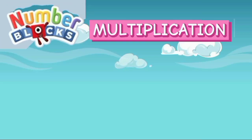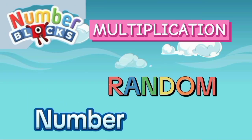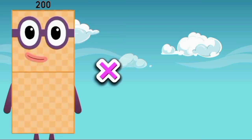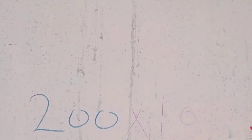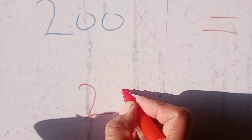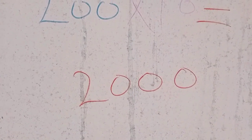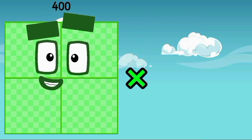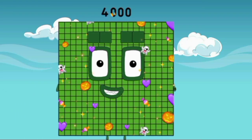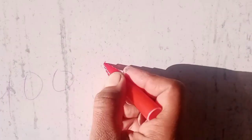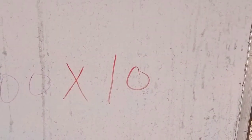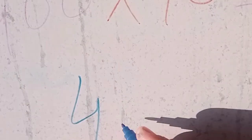200 x 10 is equal to 1000. 400 x 10 is equal to 4000.